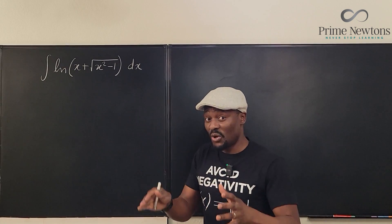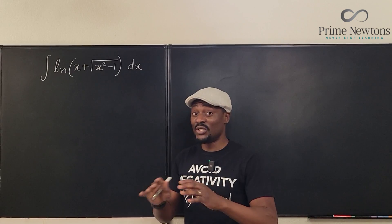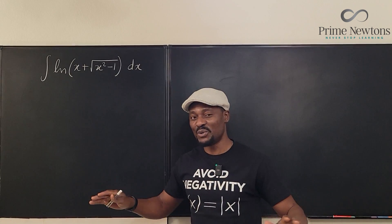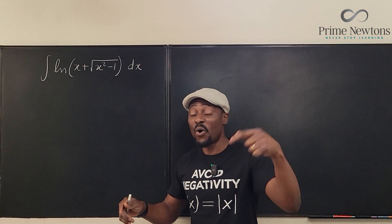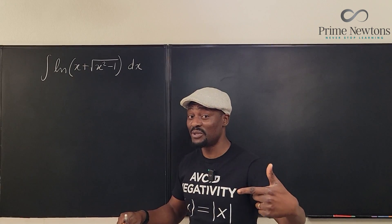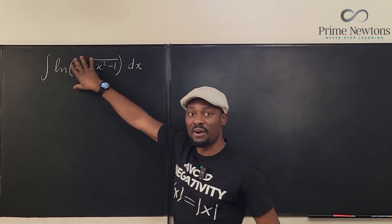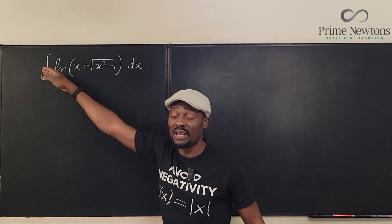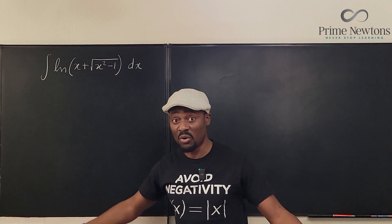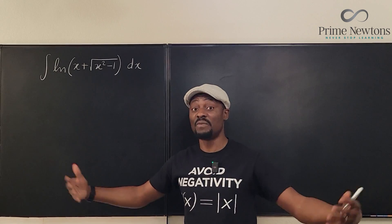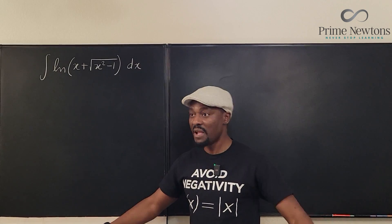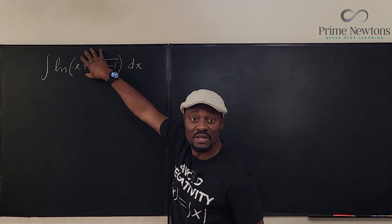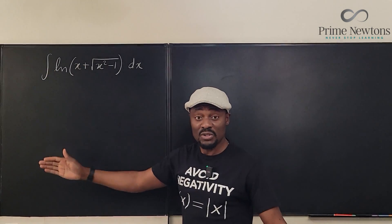Now, if the natural log function is just there alone — there's nothing else beside it — forget about u-substitution. Because you always require in u-substitution that the derivative of whatever you have in the natural log function will be multiplying the natural log function, or at least a scalar multiple of it, or a form of it. But right now, what we have is a natural log function that has an argument, but there's nothing else multiplying it.